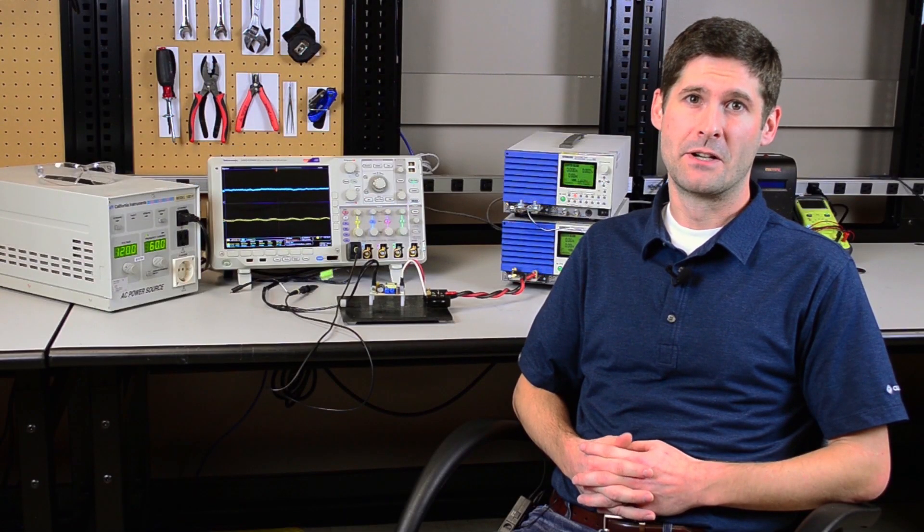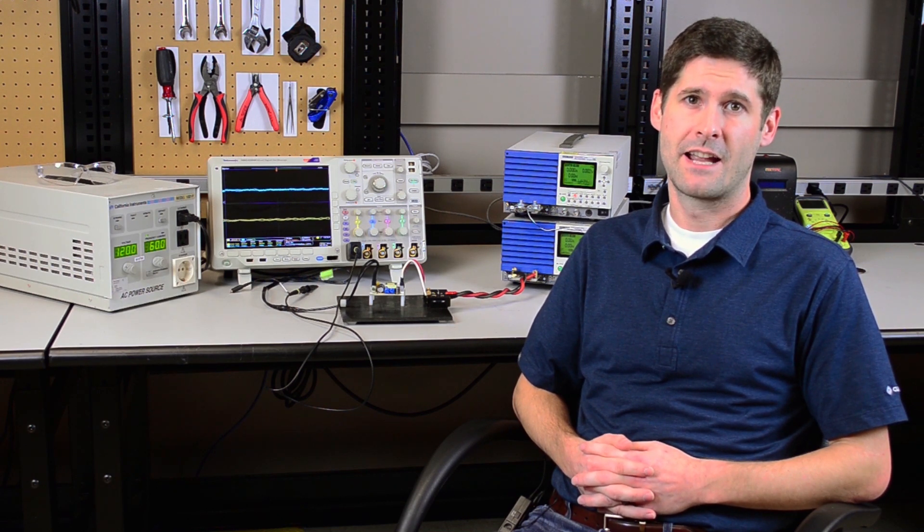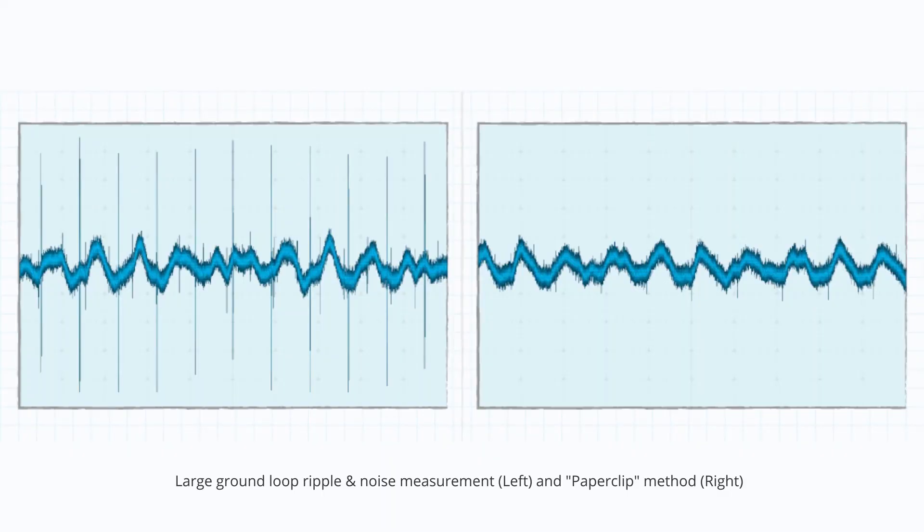While the ripple is an inherent and predictable attribute of a power supply, the noise is caused by parasitics and the rapid rates of change of current that occur within the power supply. Noise usually presents itself as high-frequency voltage spikes on the ripple waveform.